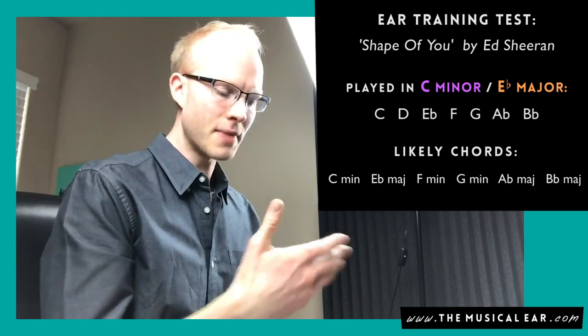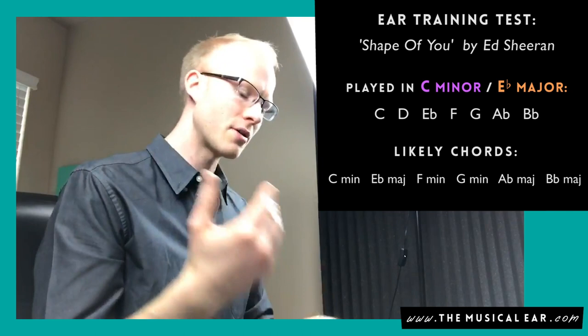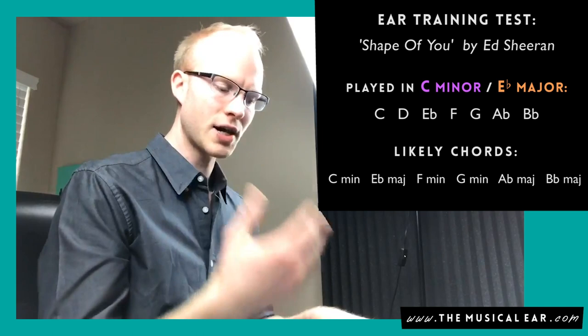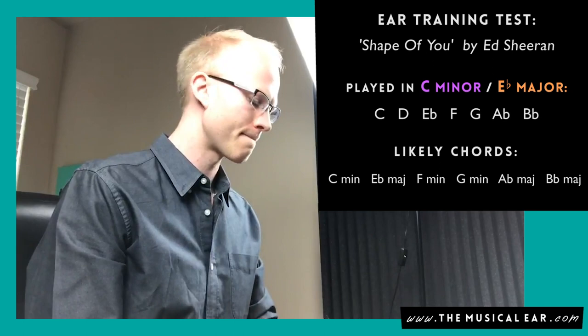So in our major scale of E flat major, that would be the root, second and third. Or in the minor scale, if you're thinking from C minor's point of view, that's going to be the third, the fourth and the fifth. So that's the minor third, the fourth and the fifth. But in this case, we actually do get the full shape. This is the sort of second common shape, which is C, E flat, F, G. So we've now transcribed Ed Sheeran's Shape of You.